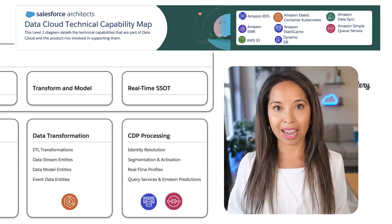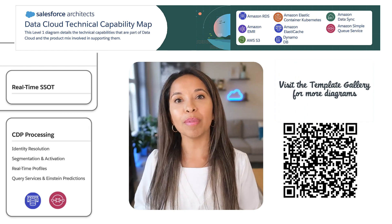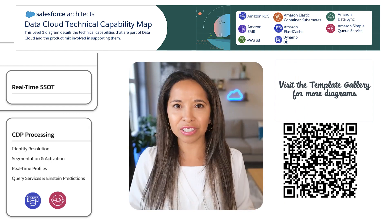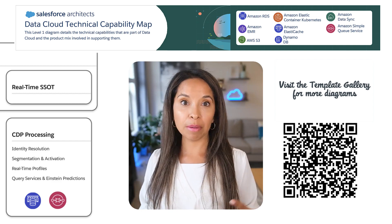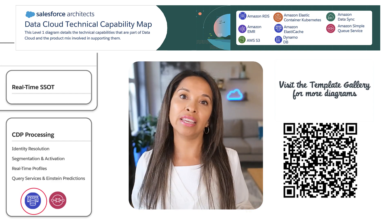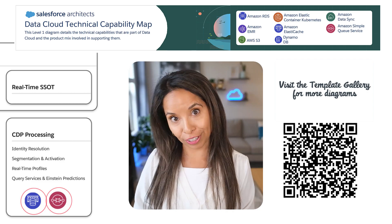Once we have the data mapped to our S Objects, we can use it as the single source of truth. We can act on it in real time, perform identity resolution, figure out those matching profiles, duplicate profiles, segmentation. We can see that beautiful customer profile, we can query using SOQL or SQL, we can use AI, and also automate actions in other systems through activation. These capabilities leverage Amazon ElastiCache and Amazon Simple Queue Service.